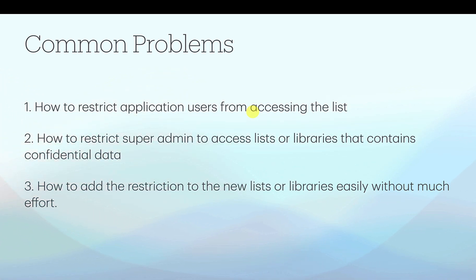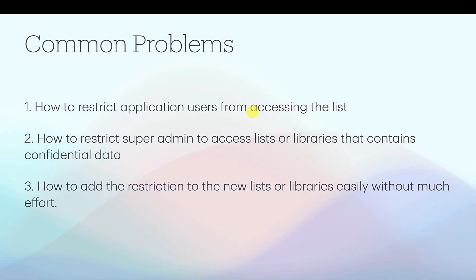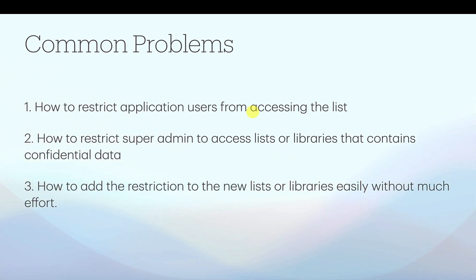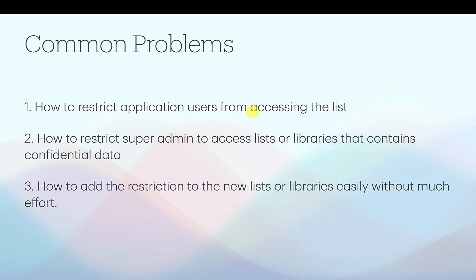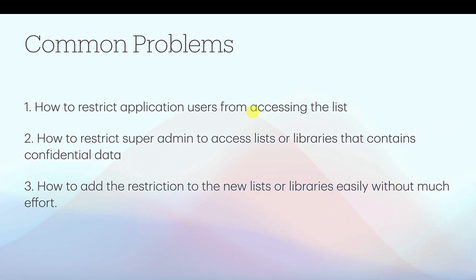The same users, since they have contribute access to the lists and libraries, can access them directly from the site contents. When the application tries to restrict what they can view or edit, it works at the app level — but on the back end, permissions are mapped to the parent list, giving access to all items. Maintaining item-level permissions becomes very difficult if you cross the threshold of 5,000 items in the list or libraries.